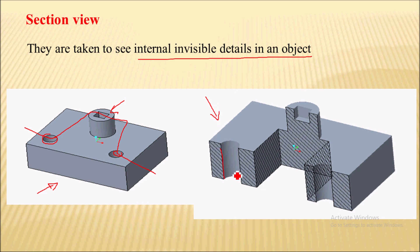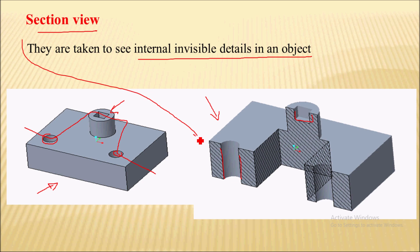So I am able to see the details for the hole as well as the slot. Section views are taken to see internal invisible details in an object, and they are shown by section lines, which are usually drawn at a 45 degree angle in engineering drawing.